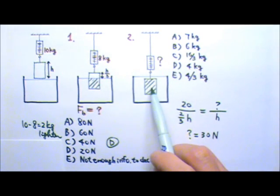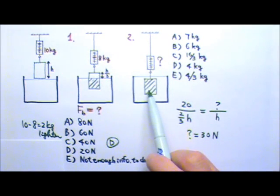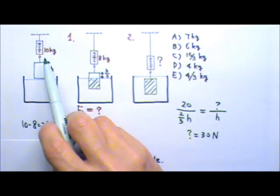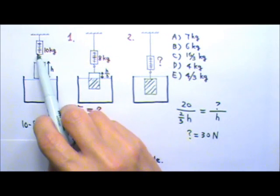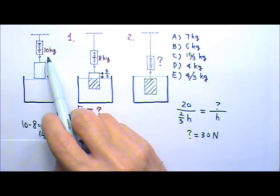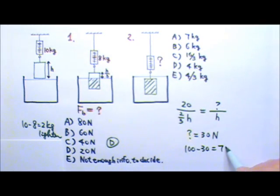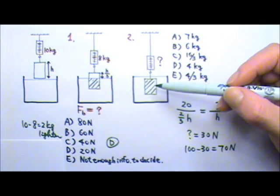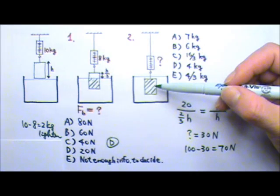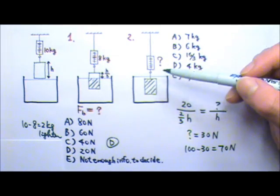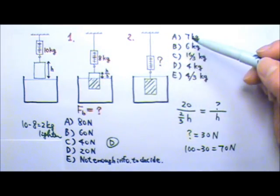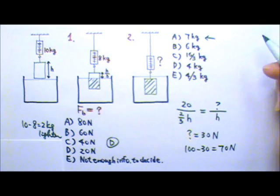This means the block is going to seem 30 N lighter. The normal weight of the block is 100 N, so 100 minus 30 gives us 70 N. The block has an apparent weight of 70 N, which means an apparent mass of 7 kg. So the answer is A.